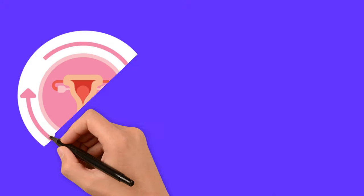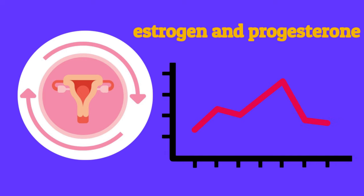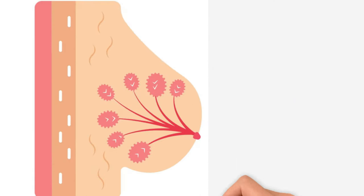During the menstrual cycle, the levels of estrogen and progesterone fluctuate, causing changes in breast tissue and leading to pain and tenderness.